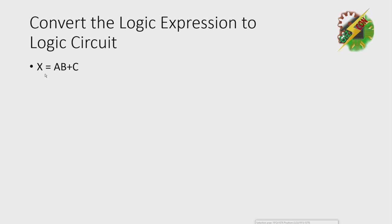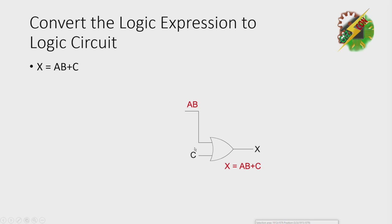Now let's have an activity. Let's try to convert a logic expression to a logic circuit. For example, X equals AB plus C. As you can see, there's a plus sign, which means it is an OR gate. We need AB for our first input and C for our second input. When AB and C enter the OR gate, you will have this output. But to generate AB, you need an AND gate. That's the equivalent logic circuit.